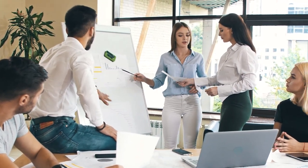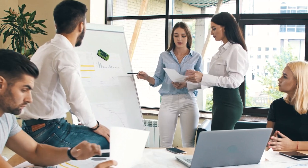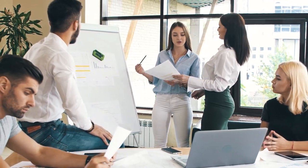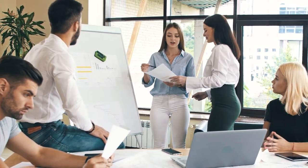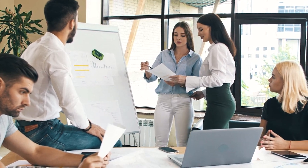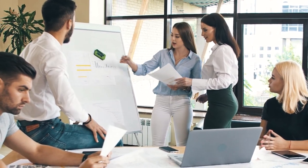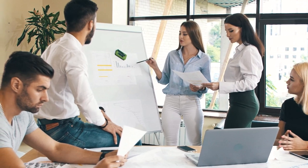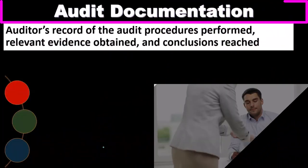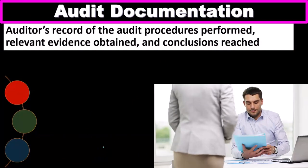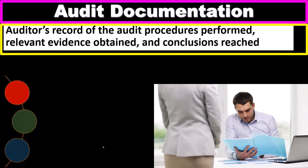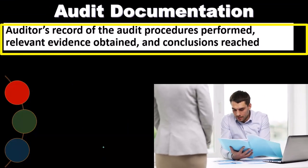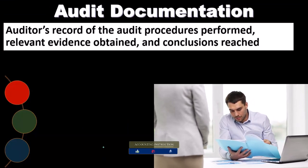In order to do that, we will have audit procedures, and of course we will need to document those audit procedures in order to support our decision. We're going to be talking more about that documentation — the audit documentation. Audit documentation is the auditor's records of the audit procedures performed, relevant evidence obtained, and conclusions reached.